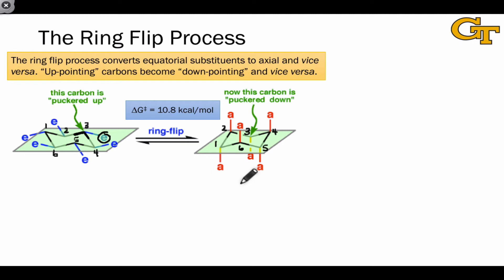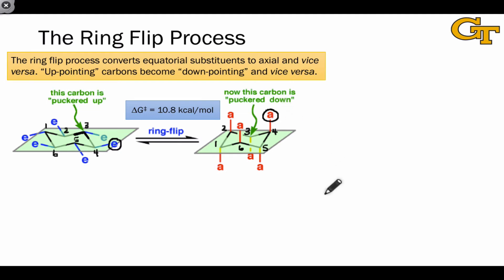The same thing happens at all the other carbons. For example, carbon 4 goes from a puckered down position with the C-C bonds pointing downward to a puckered up position after the ring flip, and its substituent goes from equatorial up to axial up. The activation energy for the ring flip process is 10.8 kilocalories per mole, which is considerably higher than any of the activation energies we've seen for rotations about bonds in linear acyclic structures.